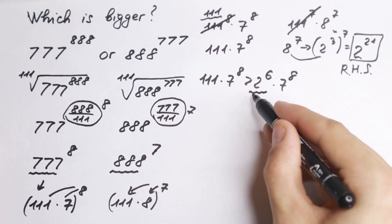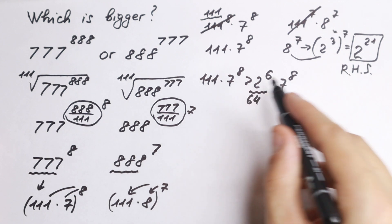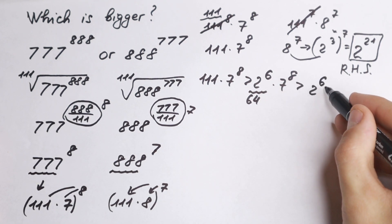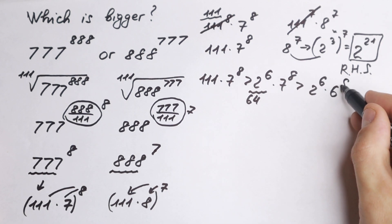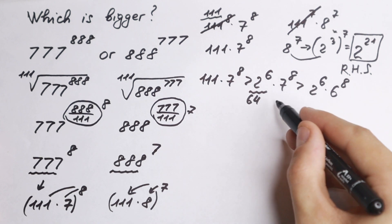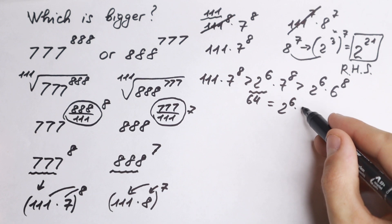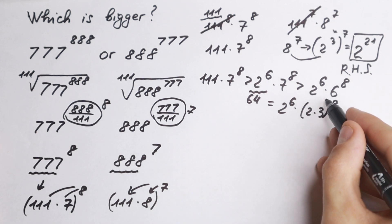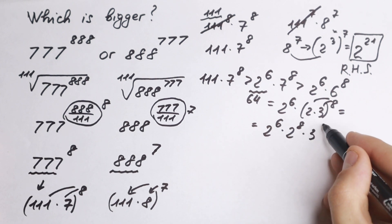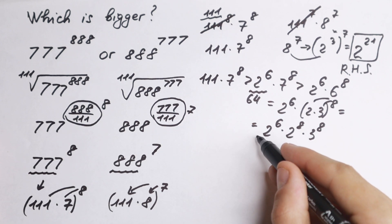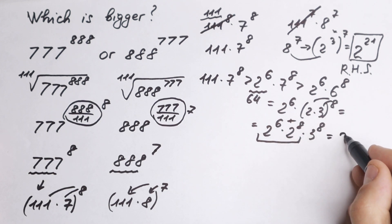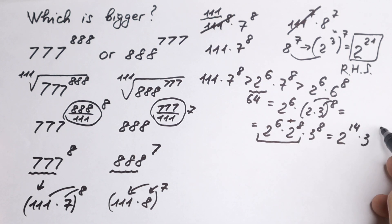This inequality is correct because 2^6 = 64 and we are multiplying by a number less than 111. Next, since 7 > 6, we can reduce 7 to 6 and still maintain a lower bound: 2^6 × 7^8 > 2^6 × 6^8. Now we write 6 as 2 times 3, so 6^8 = (2×3)^8 = 2^8 × 3^8. Therefore 2^6 × 6^8 = 2^6 × 2^8 × 3^8 = 2^14 × 3^8.